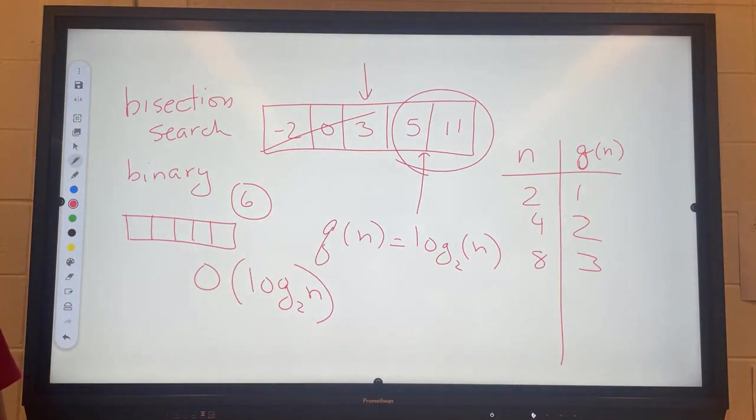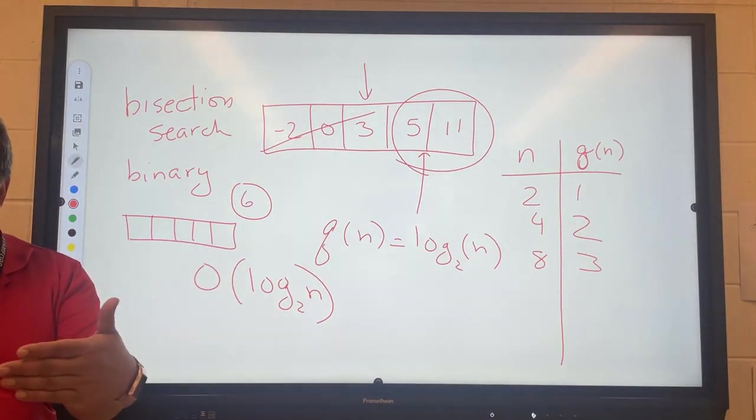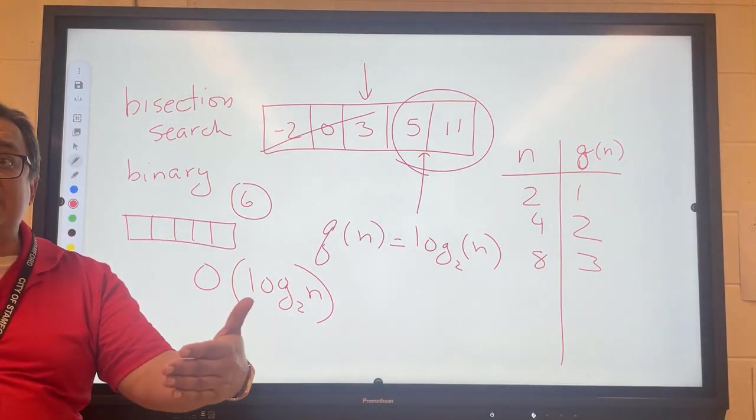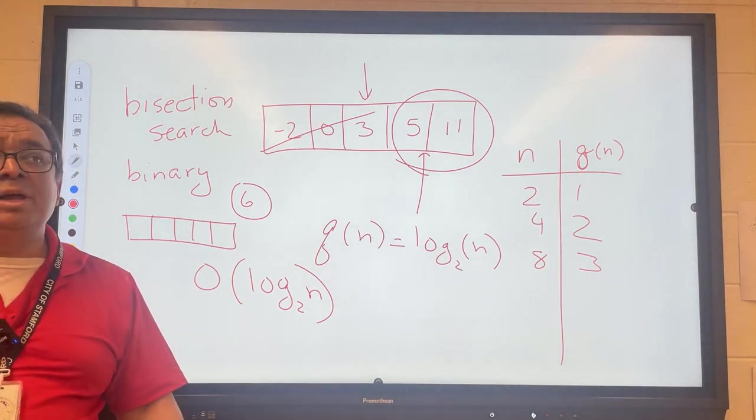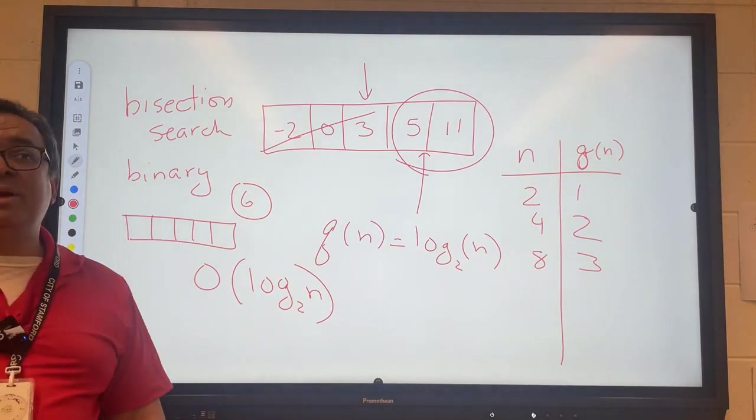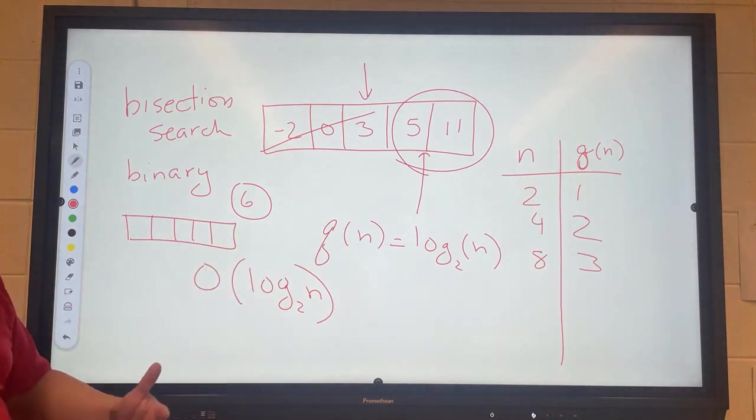That, believe it or not, is my entire lesson on searching. You need to be able to, when they show you code on the multiple choice portion of the AP exam, look at the code and say oh that's a linear search or oh that's a bisection search. As I leave this section and we're getting ready to move on to sorting, what would a bisection search look like in the code?